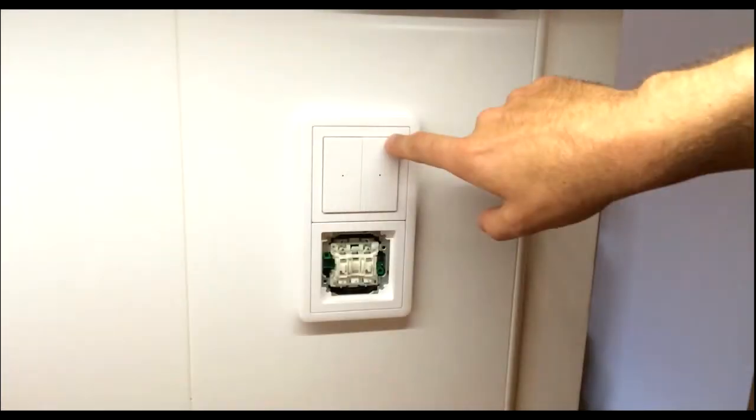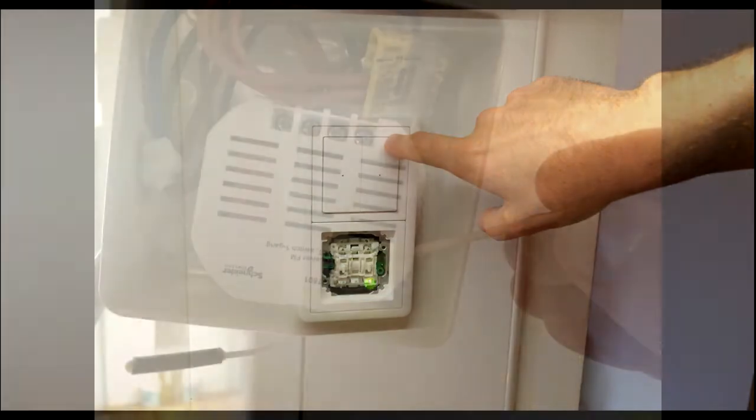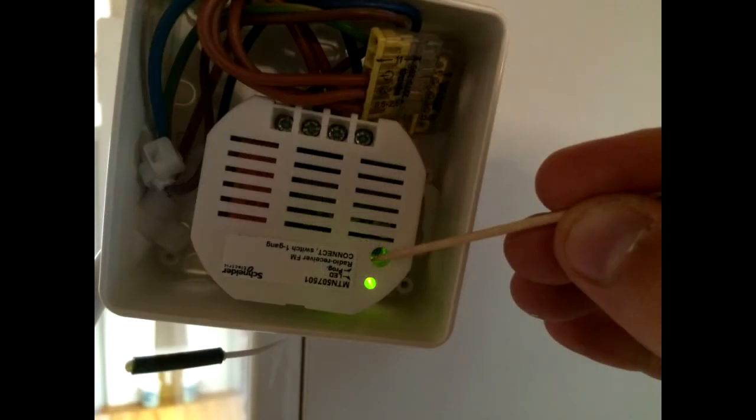The wireless light switch is actually composed of two components: the light switch itself, which is what you see, and then a wireless receiver box which catches the signal from your light switch and actually does the light switching on and off.